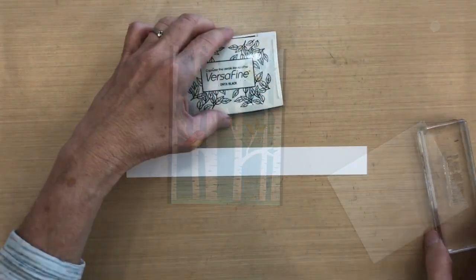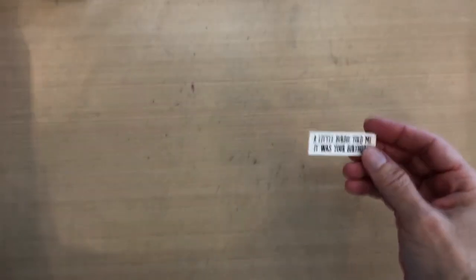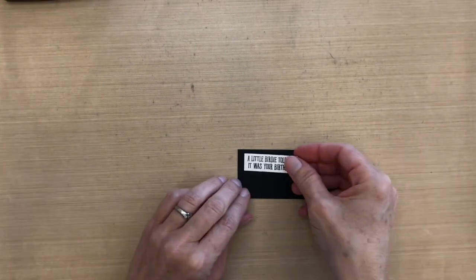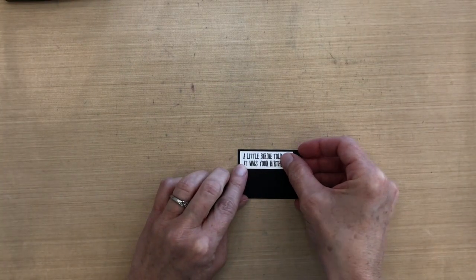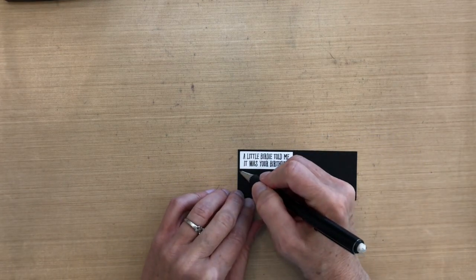For my sentiment, I'm going to stamp it in VersaFine Black Onyx and then I cut around it. I'm going to mat it to some black cardstock. I do this a lot: I put it in the corner and then I mark with my pencil on the right and then on the bottom, and then I just trim it with my trimmer.